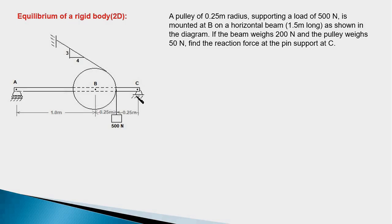Our free body diagram will be for the beam AC along with the pulley, and therefore we'll isolate the system from the cables by cutting the cable at this point and this point, and expose the cable tension forces. This is a pin support, therefore there will be two components of reaction force. This is a roller support, therefore the reaction force will be only in the vertical direction.